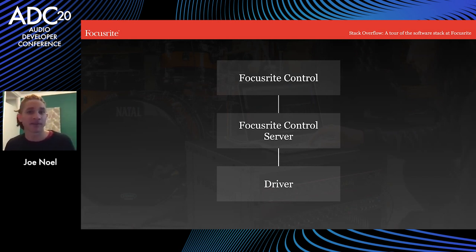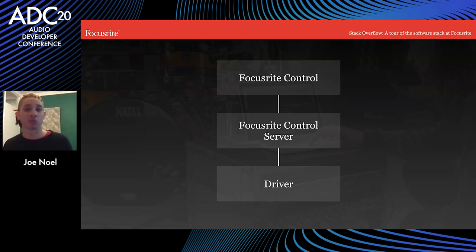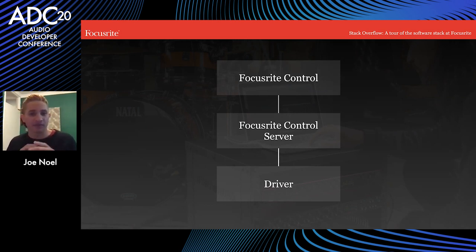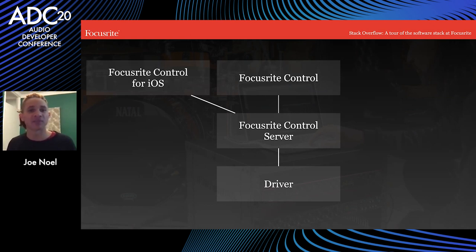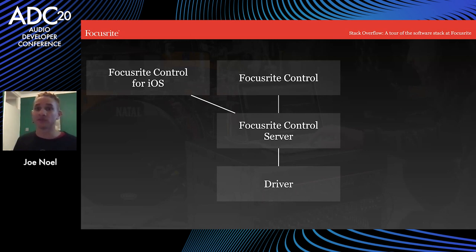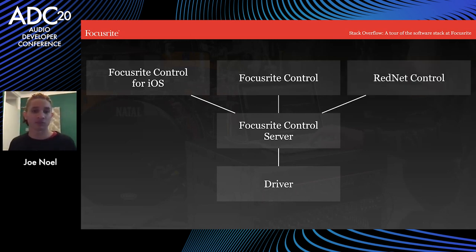Some Focusrite devices are class compliant, which means the driver is provided by the operating system. But for some other devices and some operating systems, we've got to supply the driver. Separating the app into client and server has advantages — it means other devices on the network can connect to the same server and control devices remotely. So we've got an iOS app also called Focusrite Control, written using React Native, which gives the user basic controls they can use remotely without being in front of their computer. There's also RedNet Control, which uses the same server and communicates with our Red and RedNet devices using the same protocol.